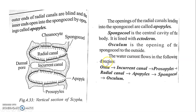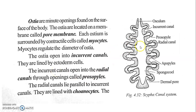In the Ascon type, there is only a direct opening — small pores through which water enters directly. That is the simplest type. This is the Sycon type. And in the Leucon type, there is further complexity.